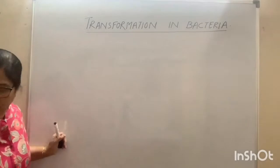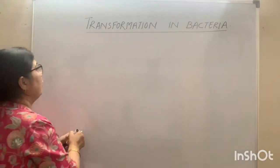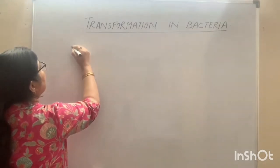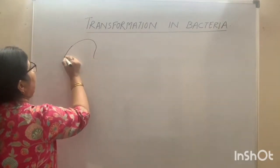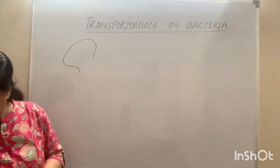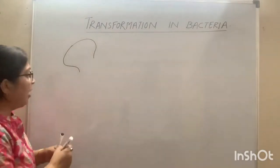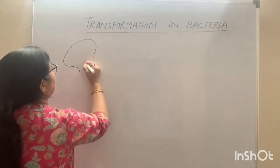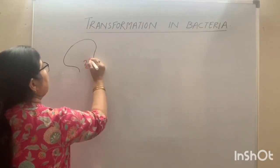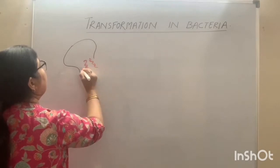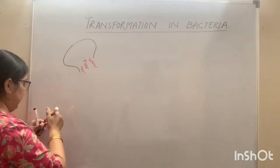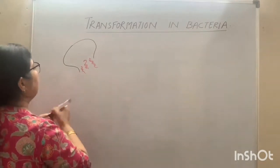When a bacterial cell ruptures — suppose this is a bacterial cell and this bacterial cell ruptures — then the DNA fragments are released. These DNA fragments are released into the surrounding medium.